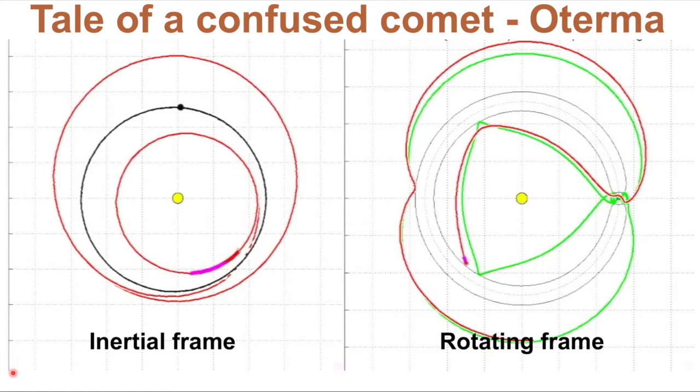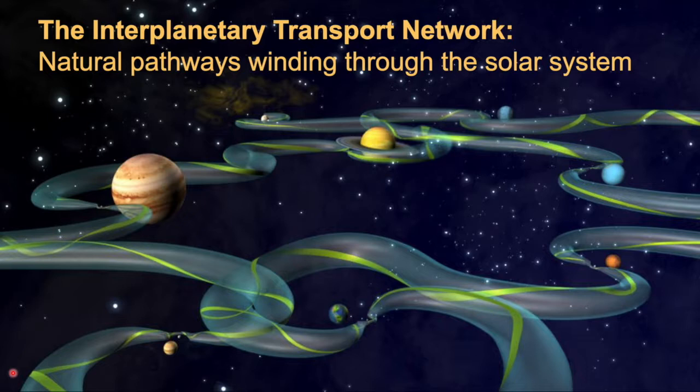These green trajectories that it's on are related to this vast network of pathways winding through the solar system that we've termed the interplanetary transport network.